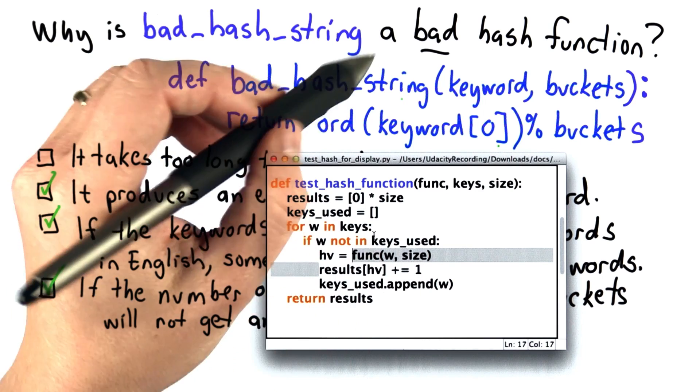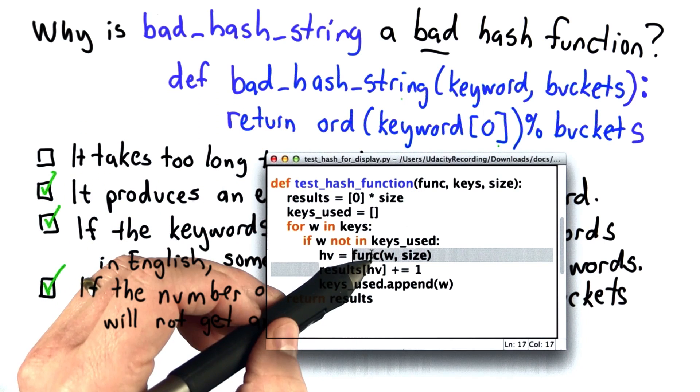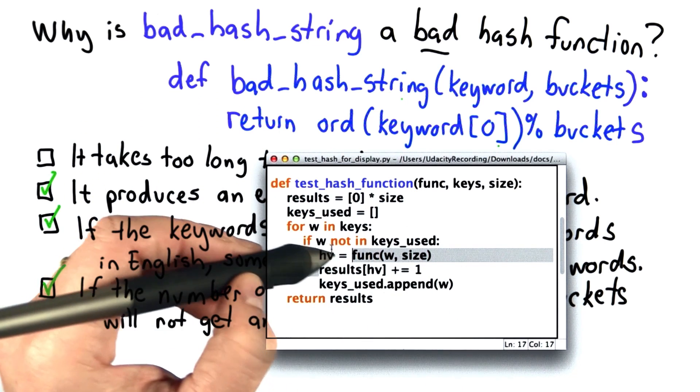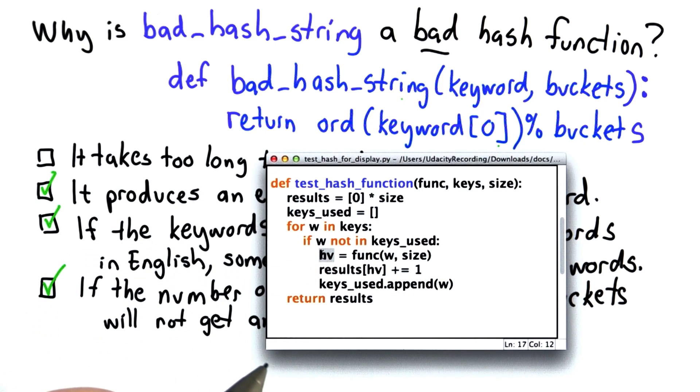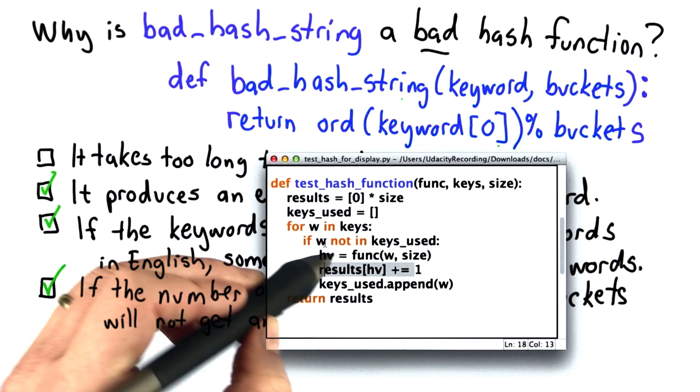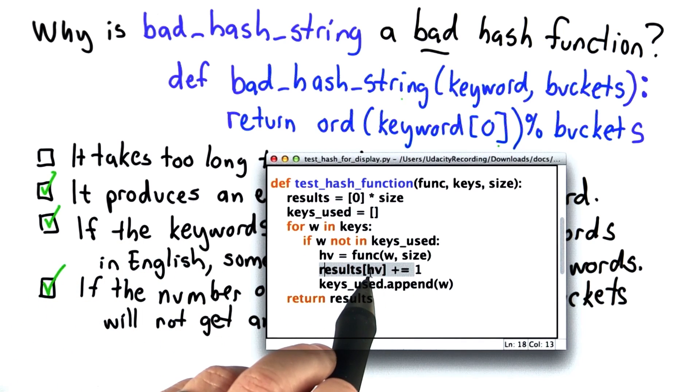So if we passed in bad_hash_string, that would be the function here. And we're calling that, passing in the keyword and the number of buckets. We're storing the result in the variable hv. And then we're increasing the value of the element at results position hv by 1.